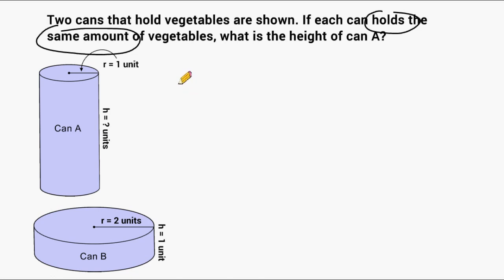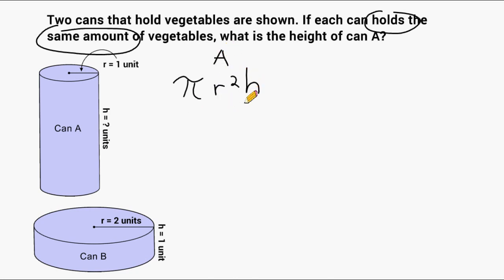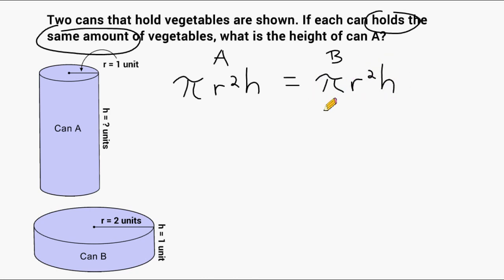The first thing I'm going to do is write out the formula to find the volume of any cylinder, which is pi multiplied by the radius squared multiplied by the height of the cylinder. This formula represents the volume of can A, and we know that the volume of can A is equal to the volume of can B. So on the other side of our equal sign we write the volume formula again for can B. Those volumes are equivalent to each other.